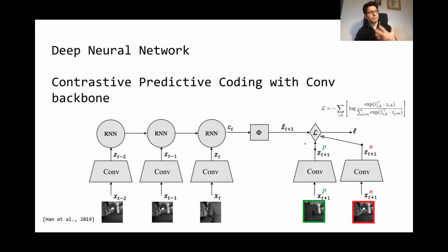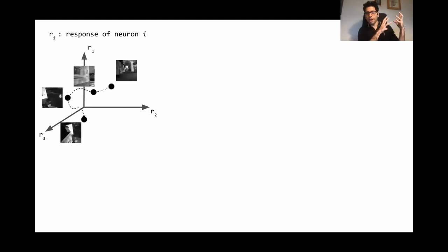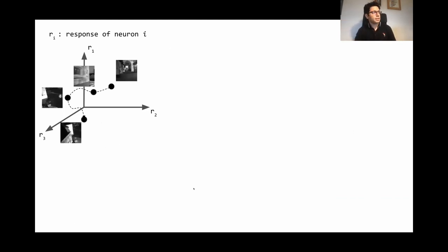Without going into technical details, roughly the model is trained to do prediction: it learns to predict the next frame of a video given the present and past frames of the same video. The model is trained end-to-end with predictive learning, and we use the convolutional feedforward part of this model as a model of the visual system. We take this convolutional feedforward model and compare it with different parts of the mouse visual system. We also need a metric to compare the model and the brain.